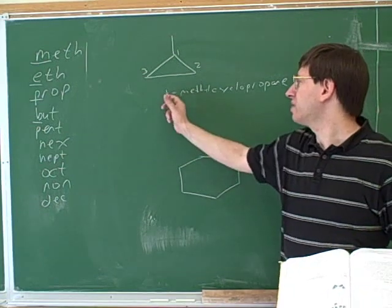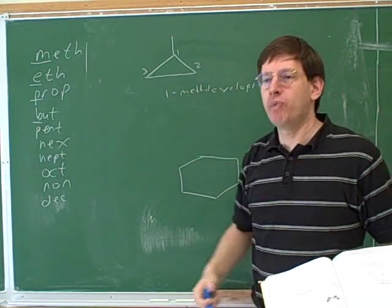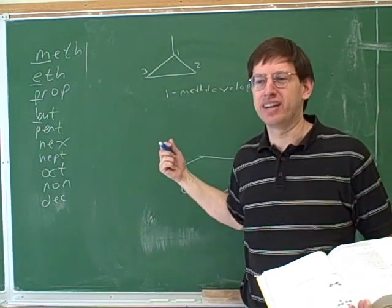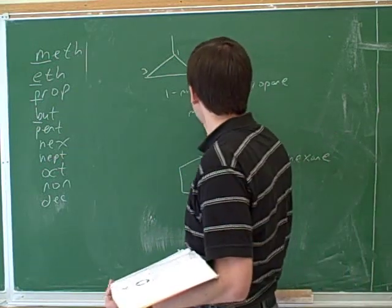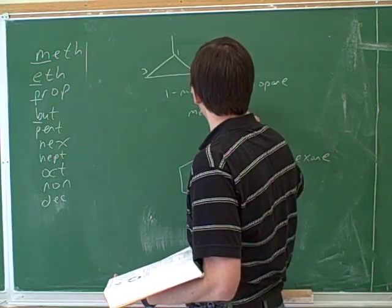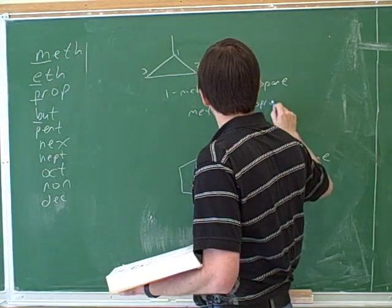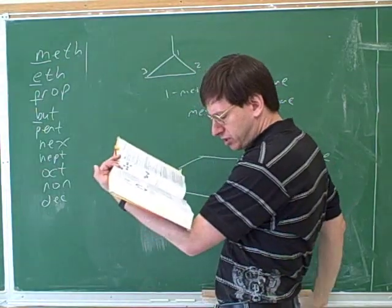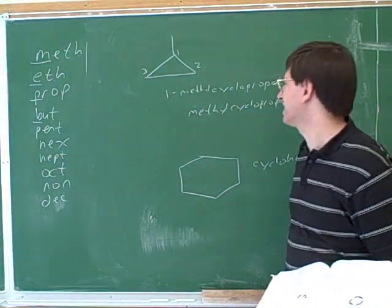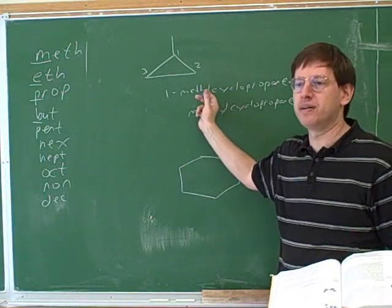So we can still use our naming systems for substituents here as well. We're going to name the ring as the parent, and then everything else would be a substituent. All right. However, if you think about it, the one here is kind of redundant because if there's only one substituent, it has to get the number one because we're going to try to give the lowest possible numbers. So it would also be acceptable just to call this methyl cyclopropane. The book just calls it methyl cyclopropane, but I think you would get full credit for writing it this way as well.